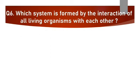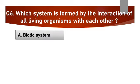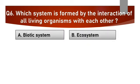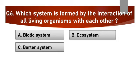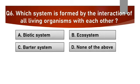Question number 6. Which system is formed by the interaction of all living organisms with each other? Options are A. Biotic system, B. Ecosystem, C. Barter system, or D. None of the above.